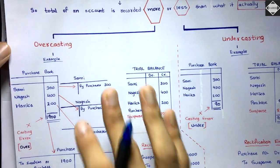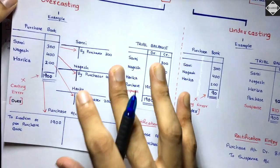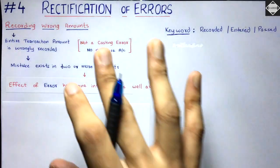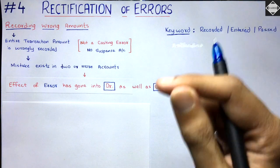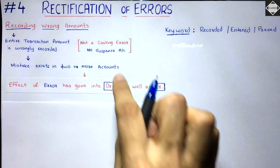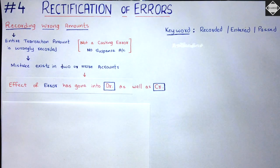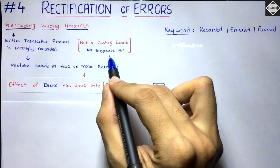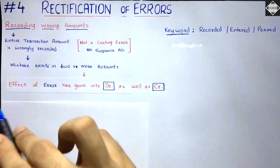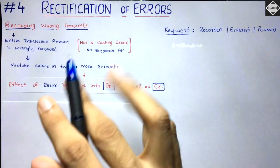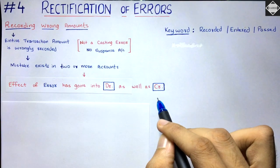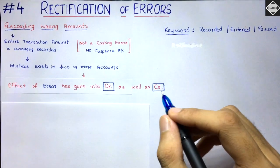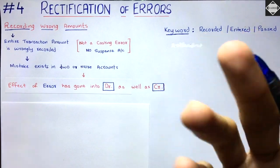Casting errors affect only one account, only one side. But the errors we are talking about here — recording with wrong amounts — the error will exist in two or more accounts. The effect goes into debit as well as credit. You cannot use the suspense account for these.